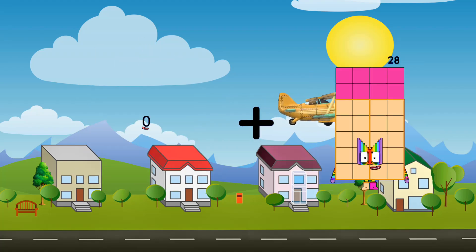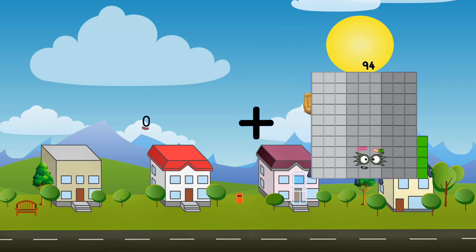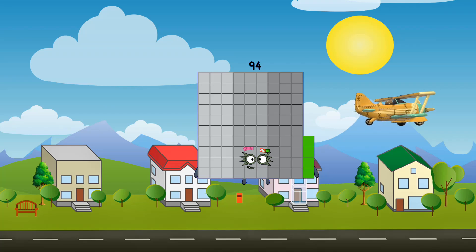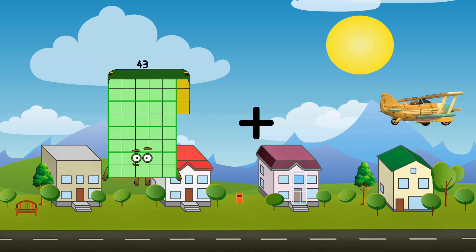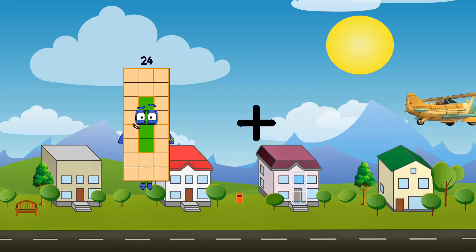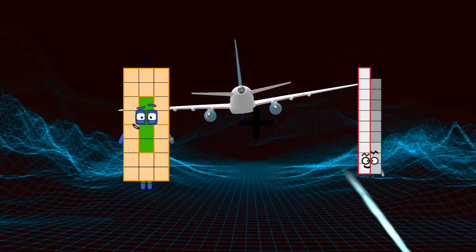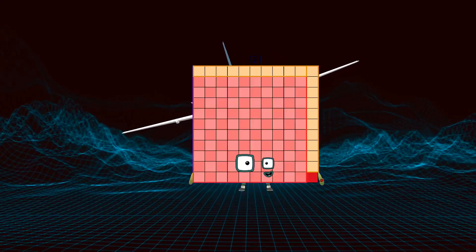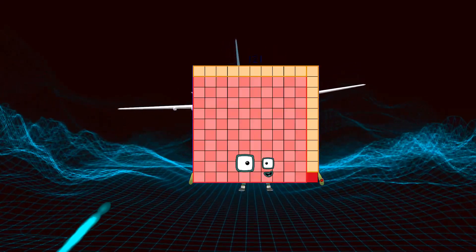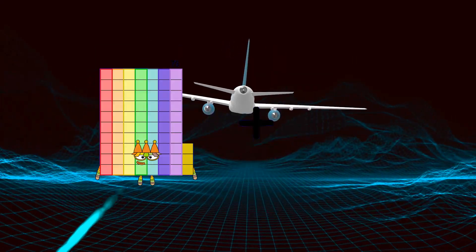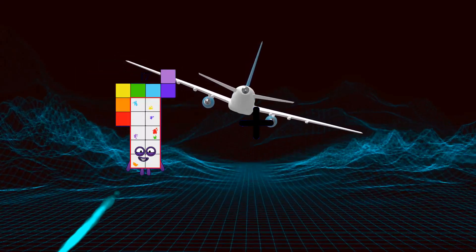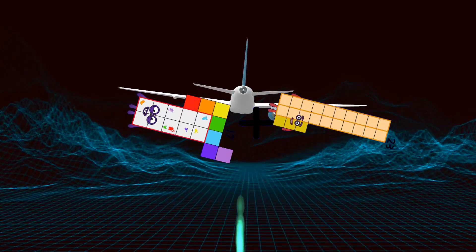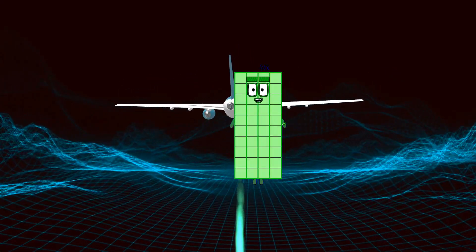Zero plus eighty-nine equals ninety-nine. Twenty-four plus eighty-seven equals one hundred twenty-one. Seventy plus eighty-nine equals one hundred twenty-one.